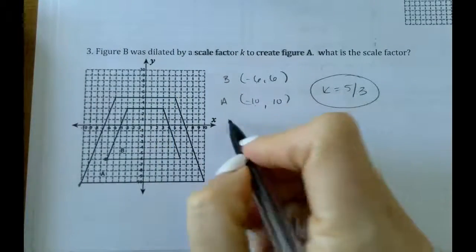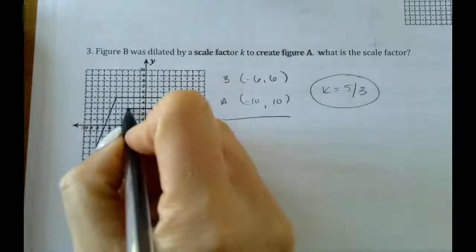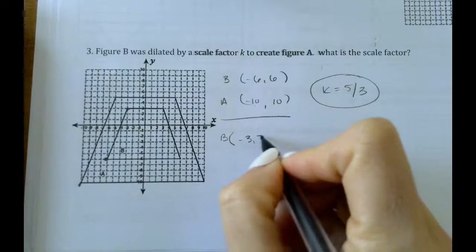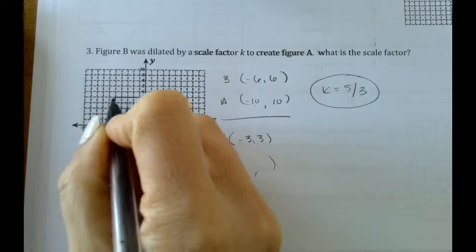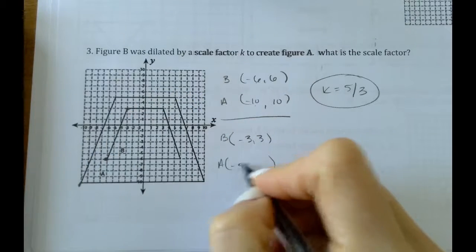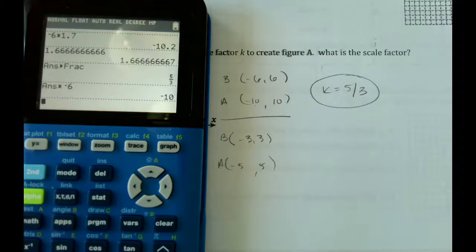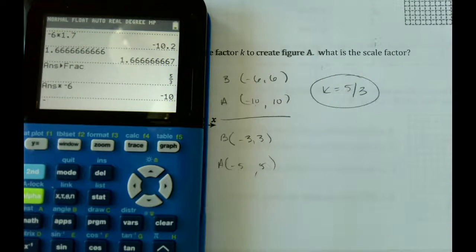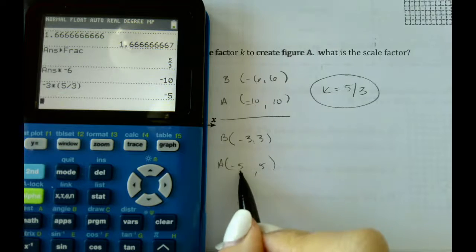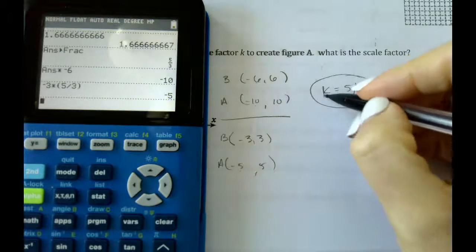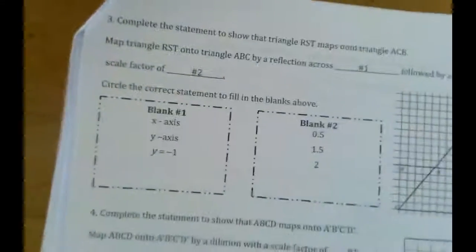Let me show you this with another one of the points. So a point that's here at B is negative 3, 3. The point that maps to A on that is negative 5, 5. So if I do negative 3 times 5 thirds, that gets me negative 5, so we know that it works. So our scale factor, k, is 5 thirds. All right, go ahead and flip that over. We're on number 3 on the back.